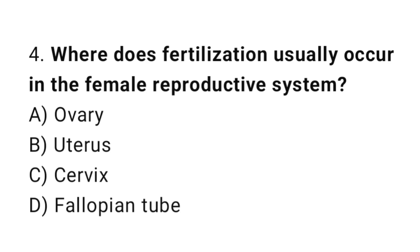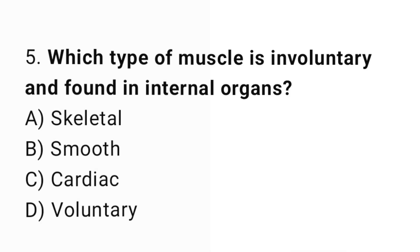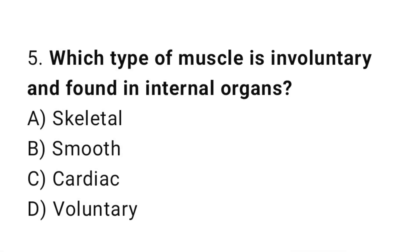Question number four: where does fertilization usually occur in the female reproductive system? The correct answer is D: fallopian tube.